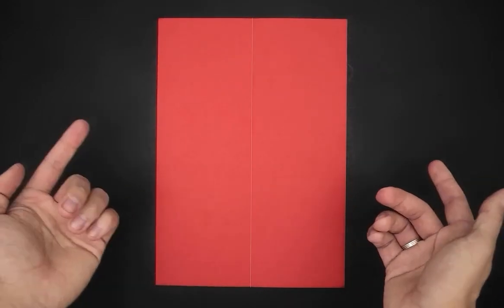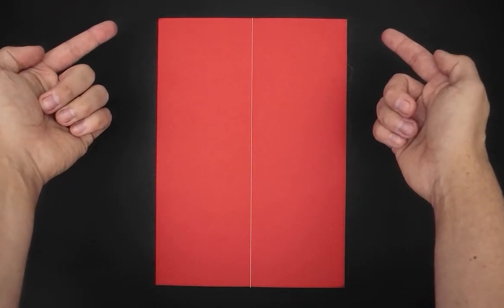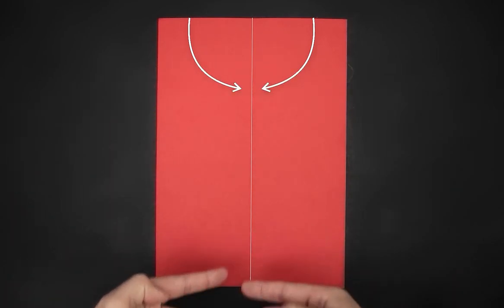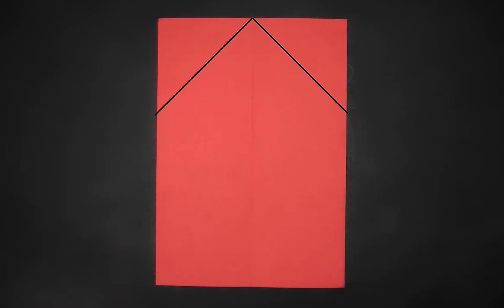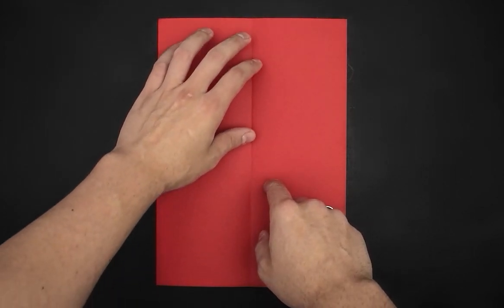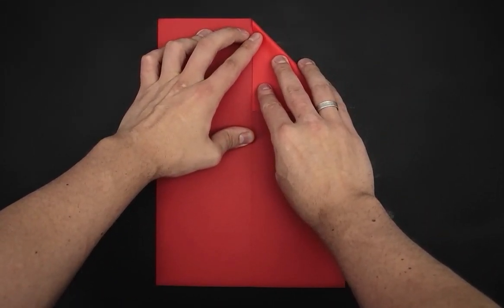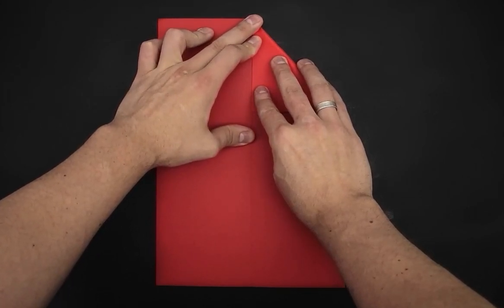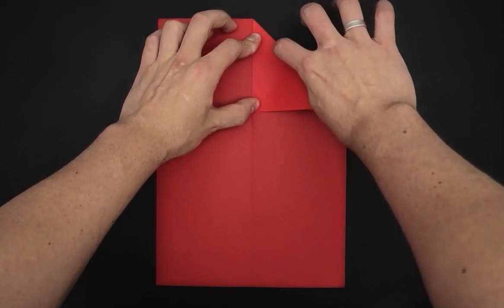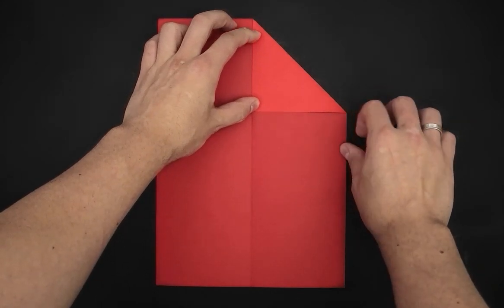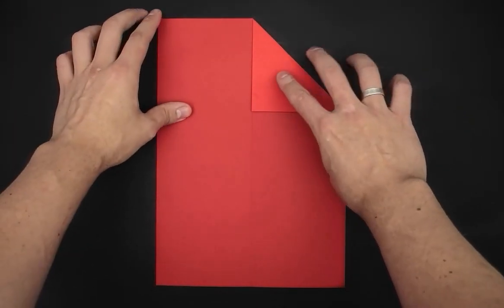And now we need to bring the two top halves to the middle, folding the paper like this. We can start on the right half. We can fold the other side in the same way.